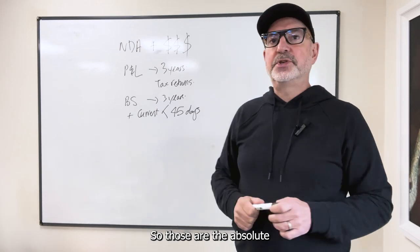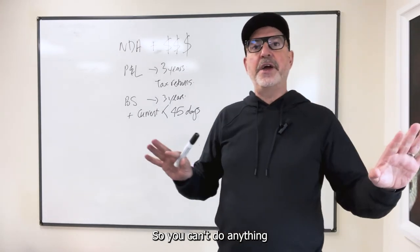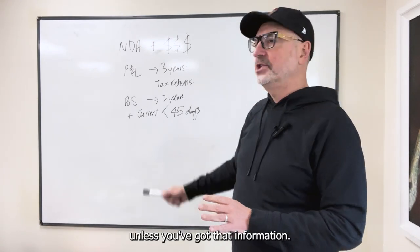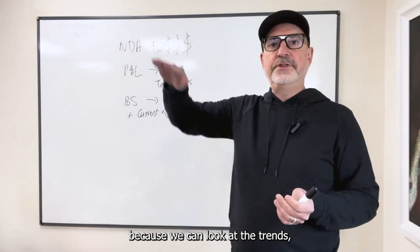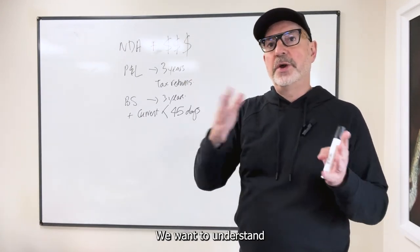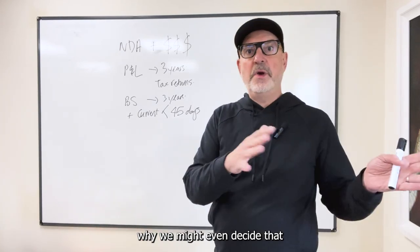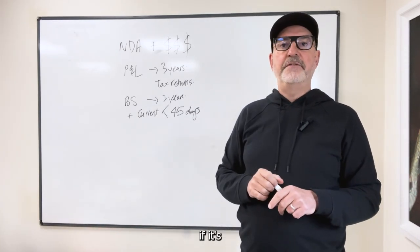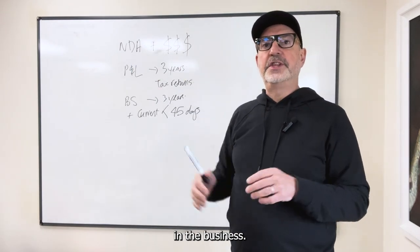So those are the absolute minimums that you need. You can't do anything in terms of making an offer on a business unless you've got that information. We need three years because we can look at the trends. If the revenues are going up, we want to understand why. If the revenues are going down, we also want to understand why. We might even decide that we don't want to buy the business if it's really, really struggling. So we need three years to look at the trends in the business.